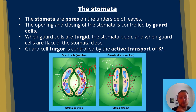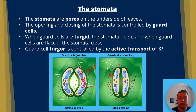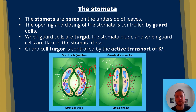When the guard cells are shrunken, that closes the stomata. Water leaves the guard cells, reducing the amount of water in the cell, and that closes the stomata, conserving water in the plant.